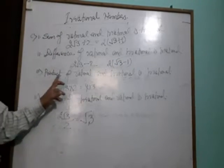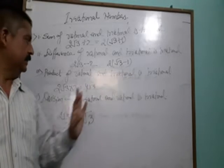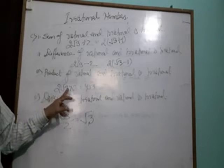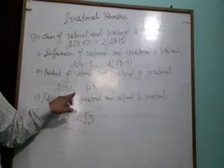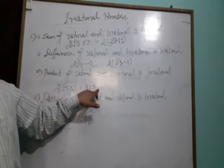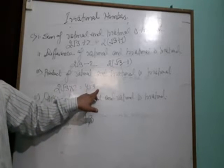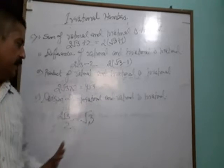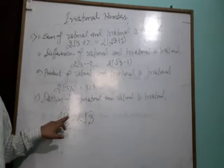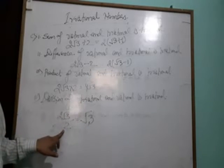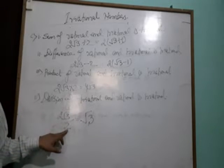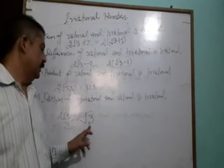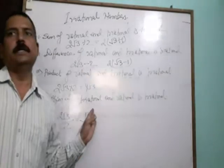The product of irrational and rational is irrational. 2 root 3 is irrational, 2 is rational, the product will be 4 root 3, also irrational. Division of irrational and rational number is irrational. 2 root 3 divided by 2 equals root 3, an irrational number.